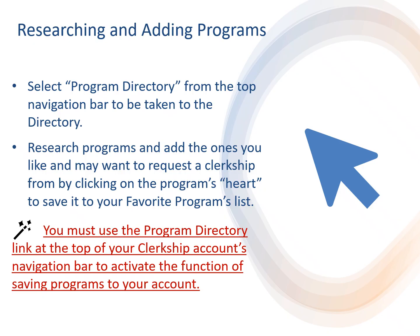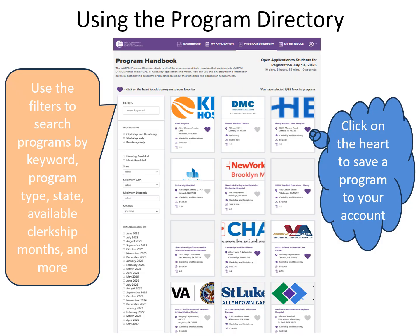A program must be in your favorite programs list for you to request a clerkship rotation from the program. Navigate to the Program Directory to learn about programs and favorite them for possible application and clerkship rotation requests. Select Program Directory from the top navigation bar of your account. The directory can be filtered by criteria on the left of the page, such as programs with available fellowship rotations in a particular month, or by doing a keyword search. To save a program to your favorites list, click on the gray heart. Once selected, the heart will turn purple.